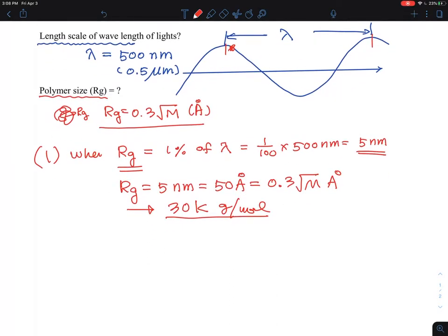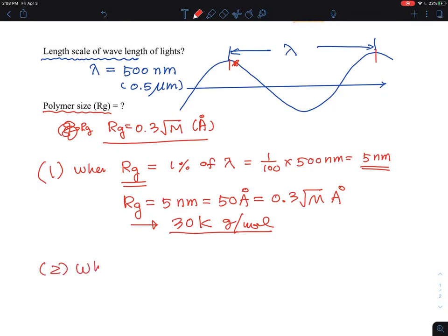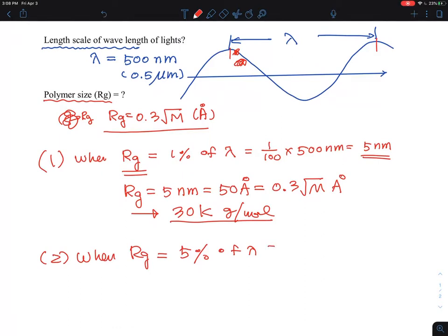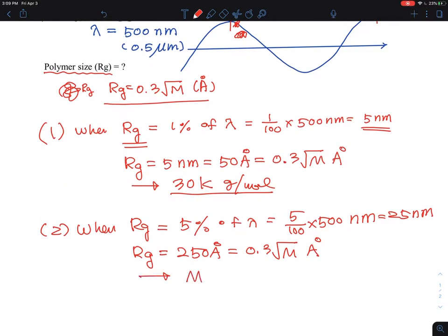But that's very small, right? Let me give you another example, when Rg is about, here, how many percent? Yeah, 5%, for example, of lambda. That's not so bad, but it's still small, but it's more decent. And I want to have a physical idea about this. So that's about 5 over 100 times 500 nanometers, 25 nanometers. And that corresponding for you to say, Rg is 250 angstrom, and 0.3 times square root M. And that's essentially we are talking about molecular weight in the range is about 700,000. Yeah, we are getting close to the 1 million.